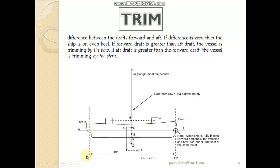We can see the AP and FP, and a mass which can move forward and aft as shown in the figure. The distances GM and BM are almost the same, which is why in longitudinal stability and trimming calculations we can consider that GML and BML are approximately equal. Although this is an approximation, it can be used for the sake of calculations.